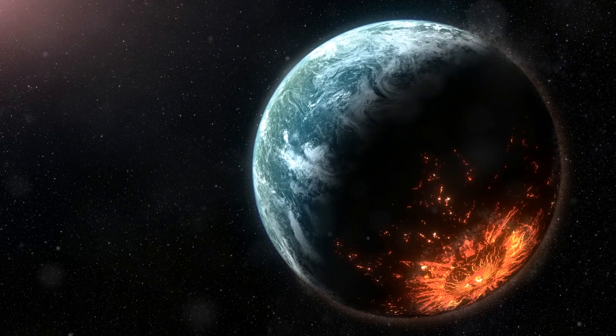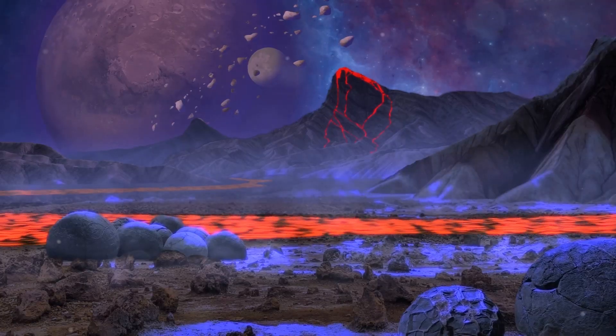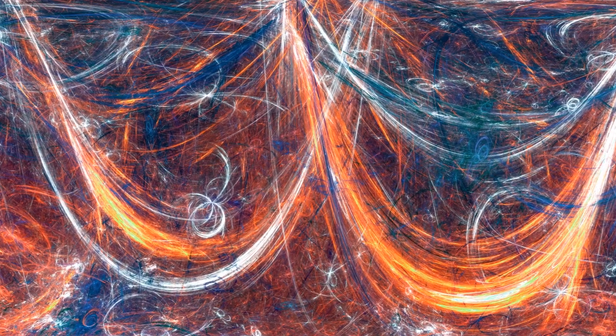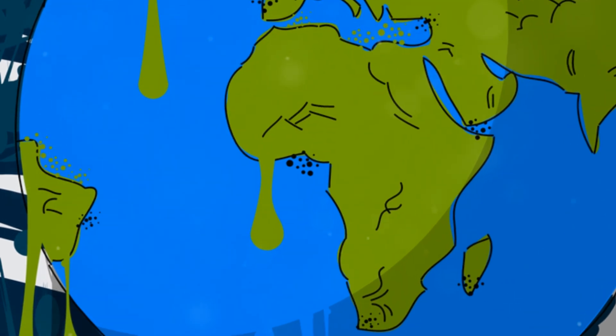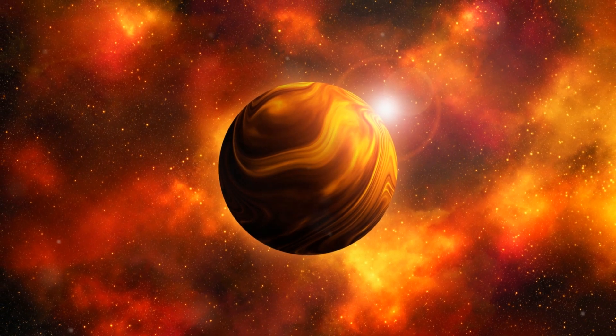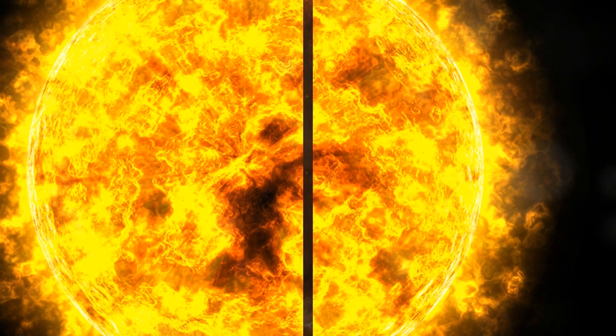Imagine a world where ice burns, where the very air you breathe is hot enough to melt lead. This is Gliese 436 b, a planet where the laws of physics seem to be broken. The ice on this planet is unlike any ice we know. It's called Ice 7, a super-dense form of ice that can exist at incredibly high temperatures. The existence of such a planet challenges our understanding of the universe, reminding us that there are still forces out there that we do not fully comprehend.